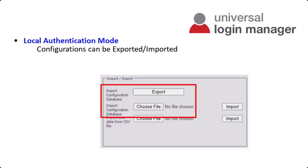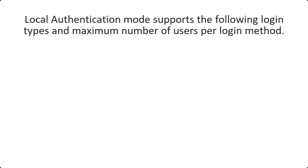Local Authentication Mode allows users to authenticate against a local database on the device containing authentication information. This database can be exported or imported via a web interface, and can be manually distributed to other devices. Local Authentication Mode supports the following login types and maximum number of users per login method.